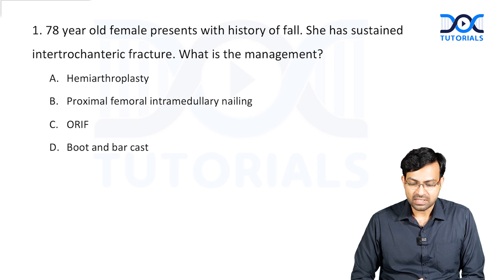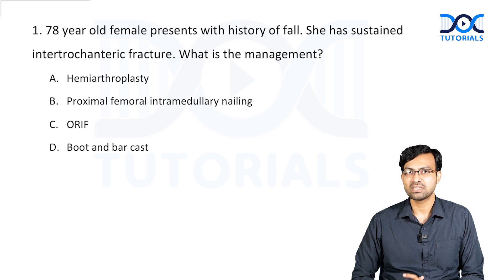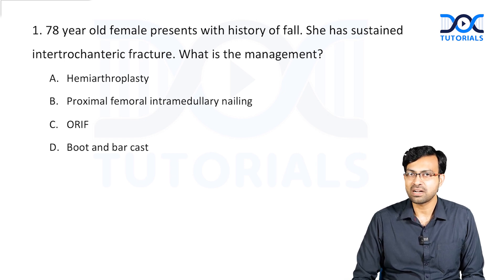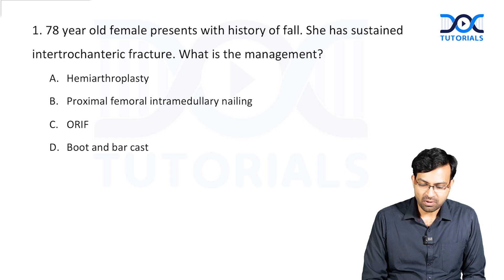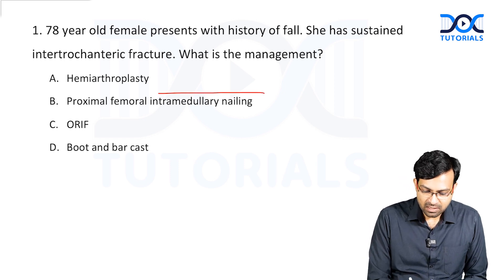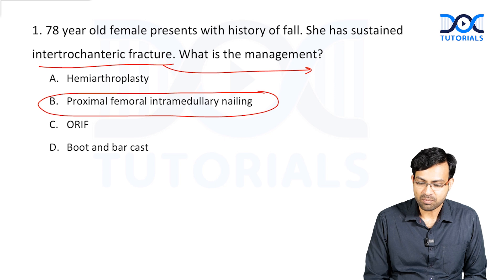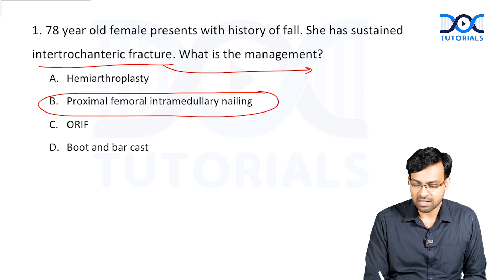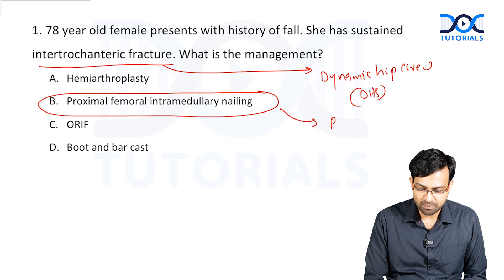Question 1: A 78-year-old female presents with history of fall. She has sustained an intertrochanteric fracture. What is the management? The options are: hemiarthroplasty, proximal femoral intramedullary nailing, ORIF, or boot and bar cast. For intertrochanteric fracture, there is only one treatment — surgery — and there are two implants we can use: the dynamic hip screw (DHS) and the proximal femoral nail (PFN). The answer would be proximal femoral intramedullary nailing.